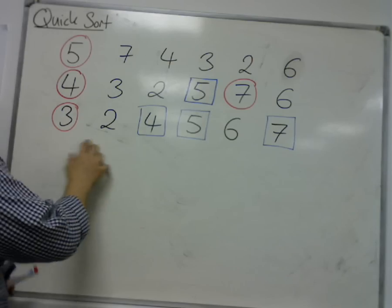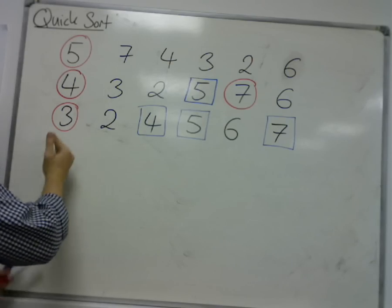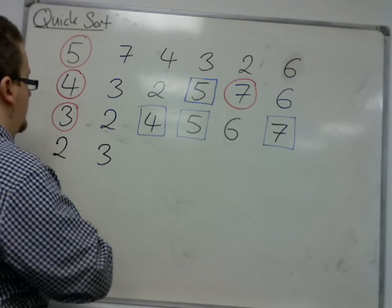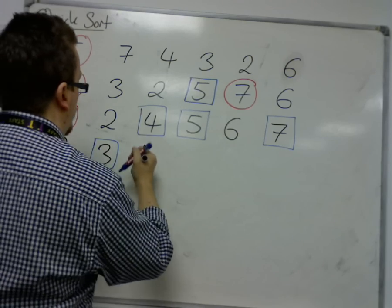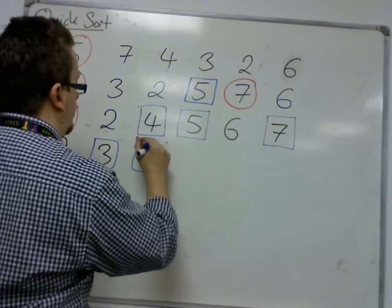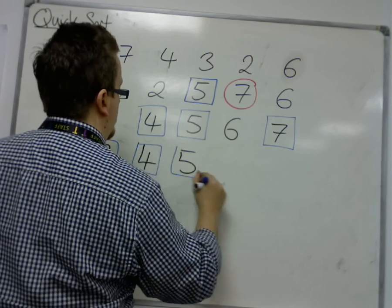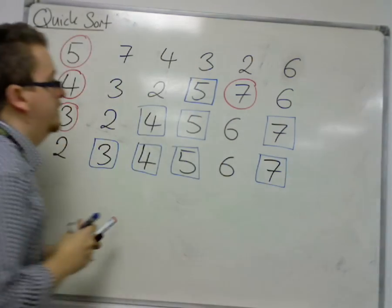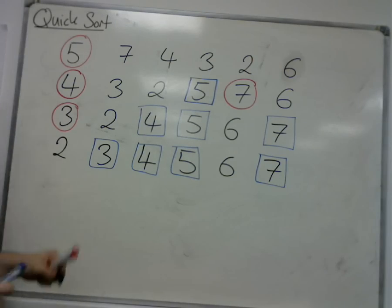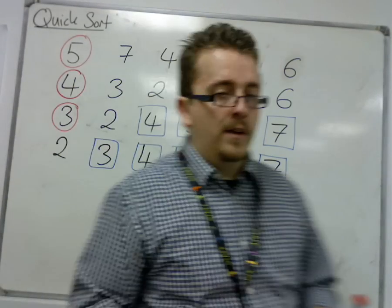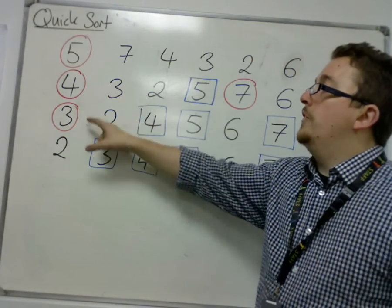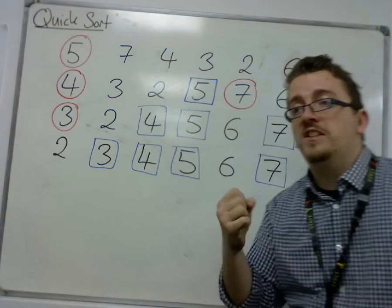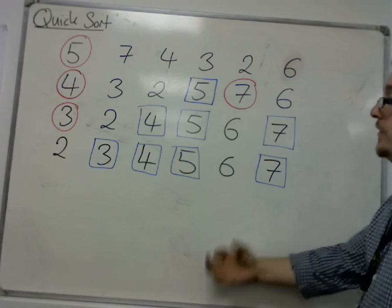The only thing we've got to deal with is over here. The two needs to go to the left of the three. The three is now a dead pivot. The four is dead. The five is dead. Then we have the six. Then we have the seven, which is also dead. And this shows the examiner exactly which numbers you're using as your pivot, which ones are now dead pivots, which ones are now fixed in place. And this is QuickSort.